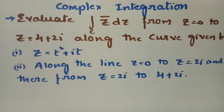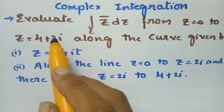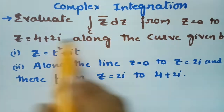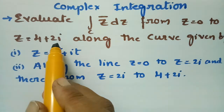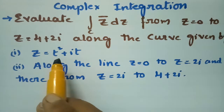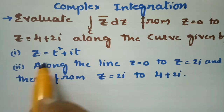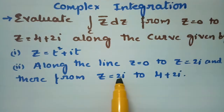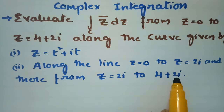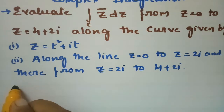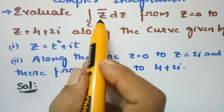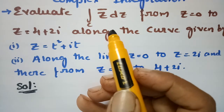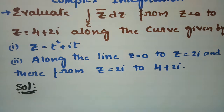Today's video I am going to explain a problem from complex integration. We have to evaluate the integral of z̄ dz from z=0 to z=4+2i along the curves given by z = t² + it, along the line from z=0 to z=2i, and then from z=2i to z=4+2i.